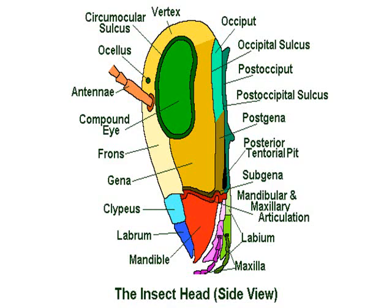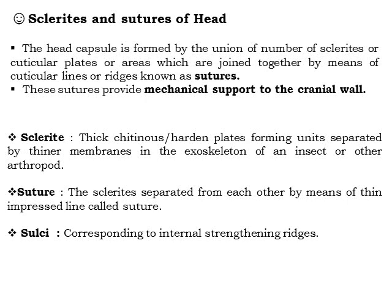In the lateral side view, we can again distinguish different parts of the head capsule: the antenna, a single ocellus, compound eyes, frons, gena, clypeus, labrum, and mandibles. Behind the mouth parts, accessory structures like the labium and the mandibular-maxillary articulation are found, which help with the flexibility of movement of the mouth parts. The posterior end connects with the thorax region, showing post-gena, post-occipital sulcus, post-occiput, occipital sulcus, and occiput. The topmost portion is the vertex.